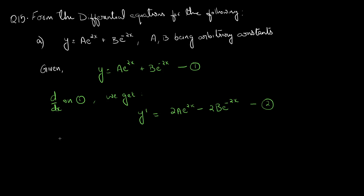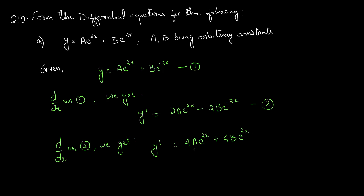Now we need one more equation. Differentiating equation 2 with respect to x, we get y double dash equal to 4a e raised to 2x plus 4b e raised to minus 2x. Let this be equation 3.